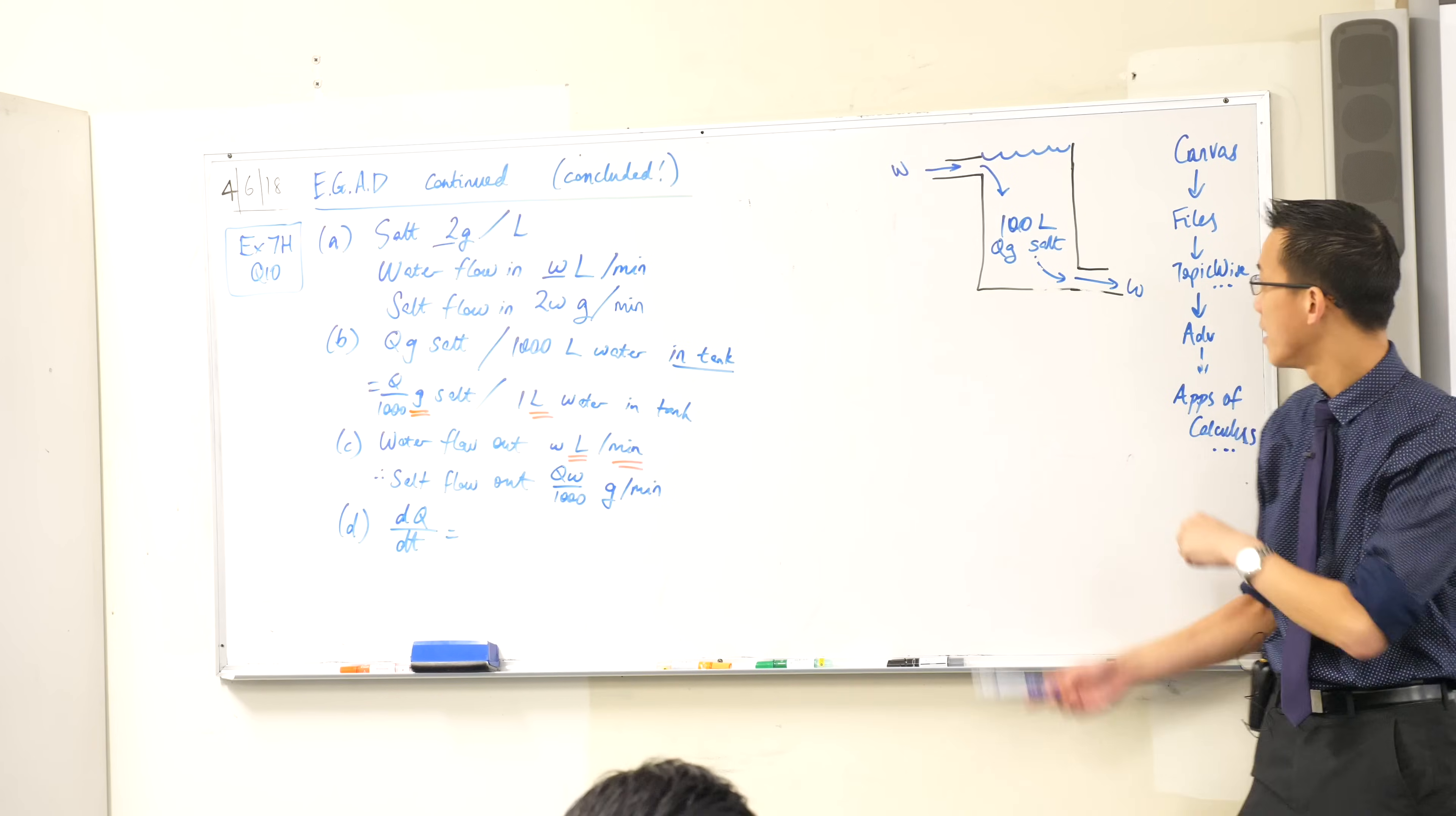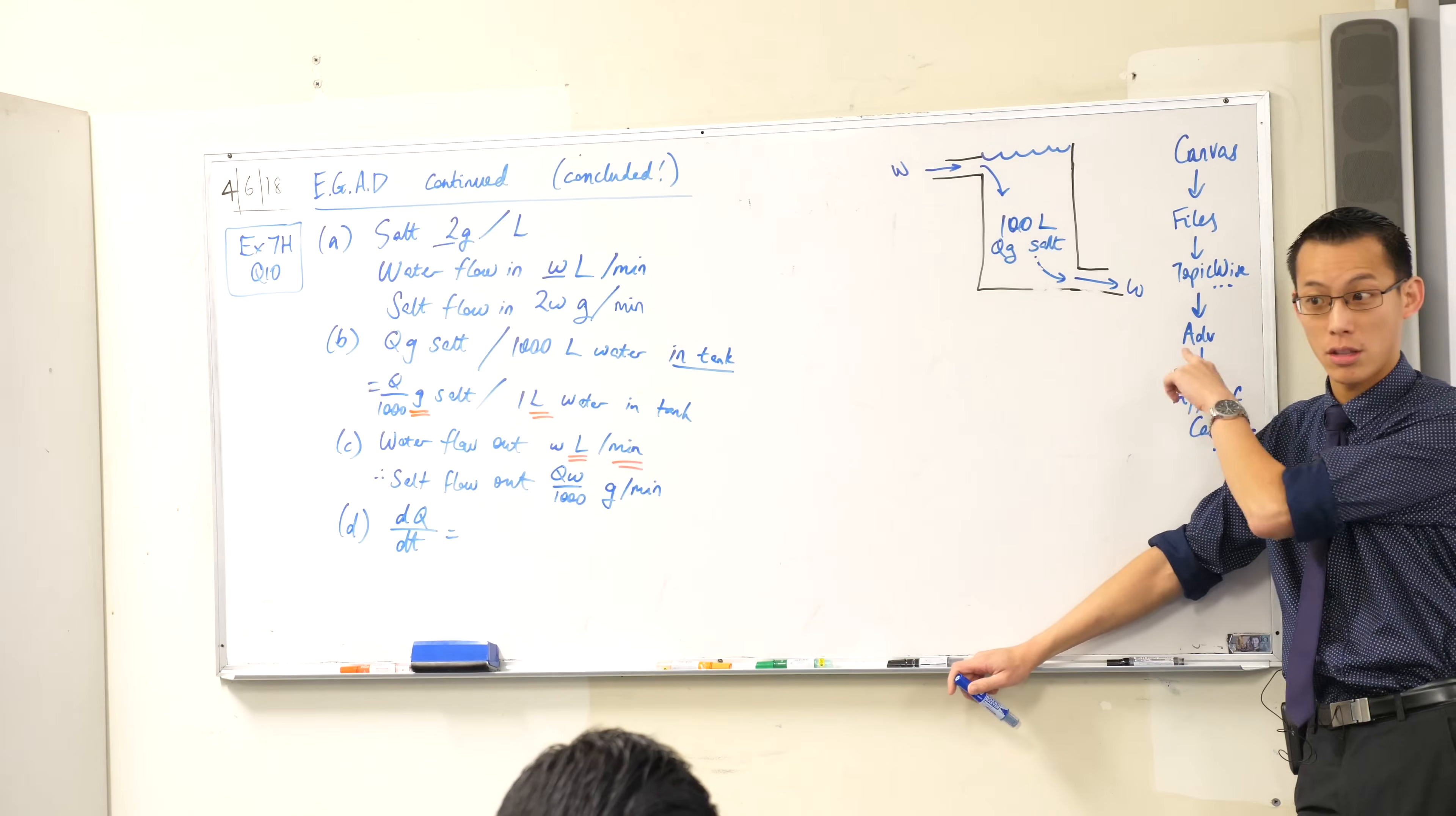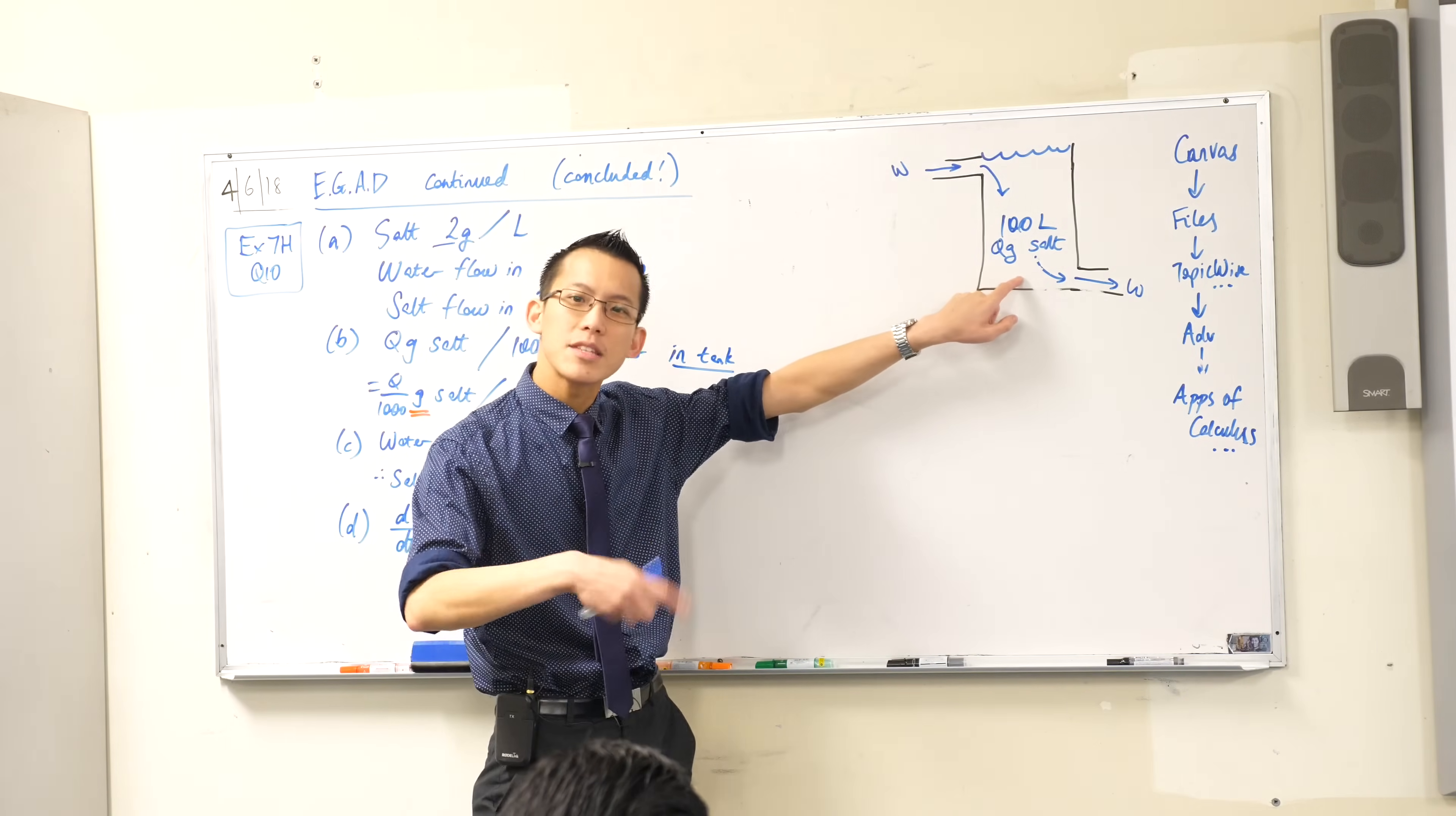It's the salt that's currently in the tank. Currently in the tank, right? So that's this quantity here. Now it's changing. Is it increasing or is it decreasing? Just as a question for you. Increasing or decreasing? The amount of salt in the water. It's increasing because I started with no salt, right? What word in the question told me that there was no salt? It was pure water. So this is going up.